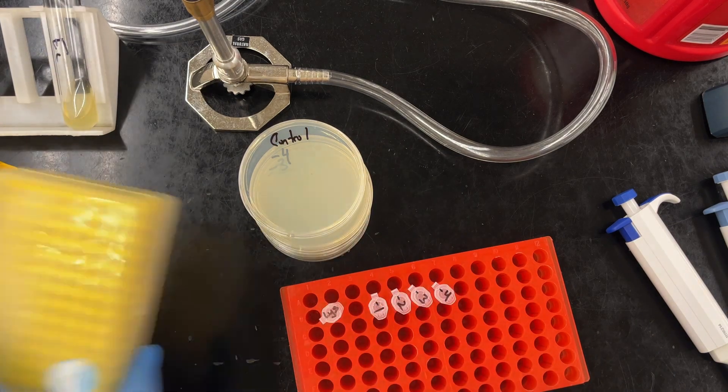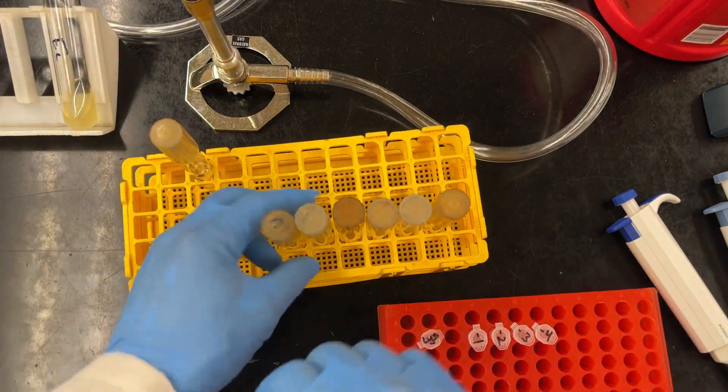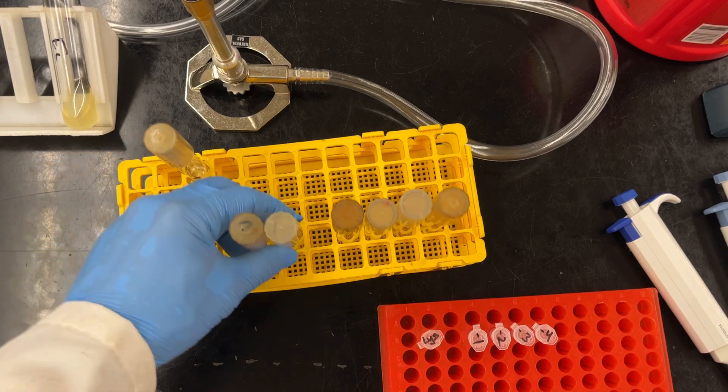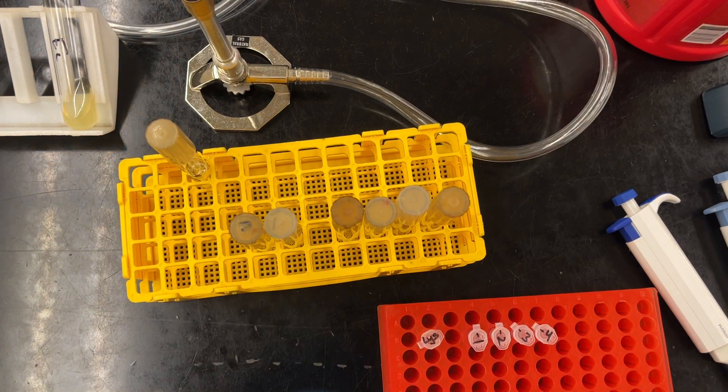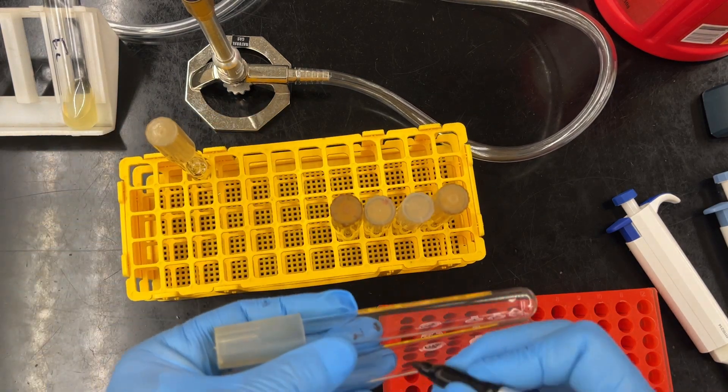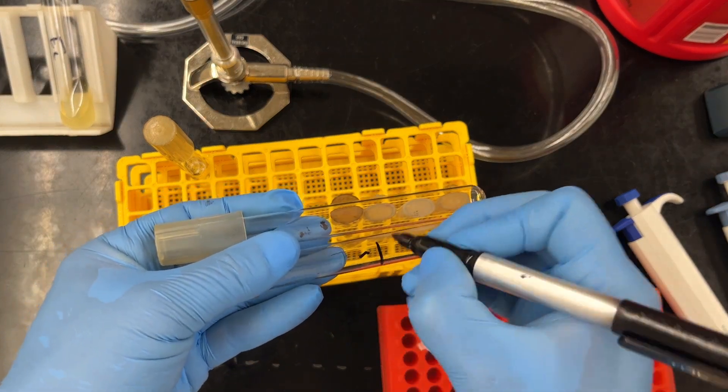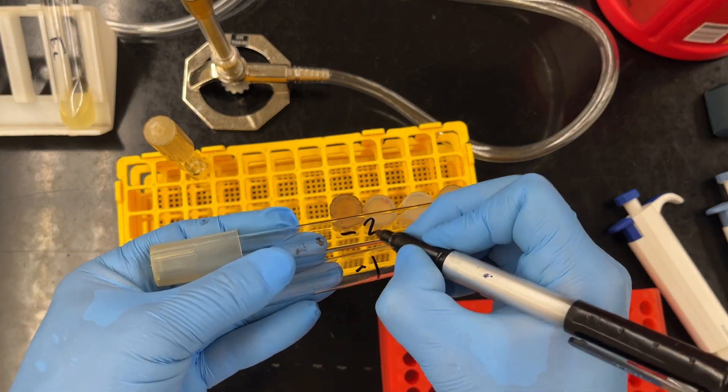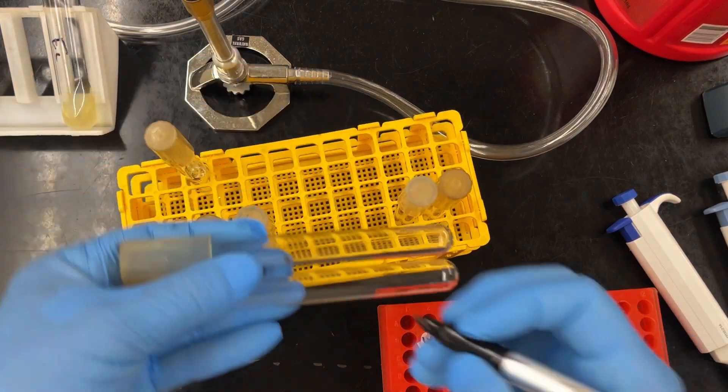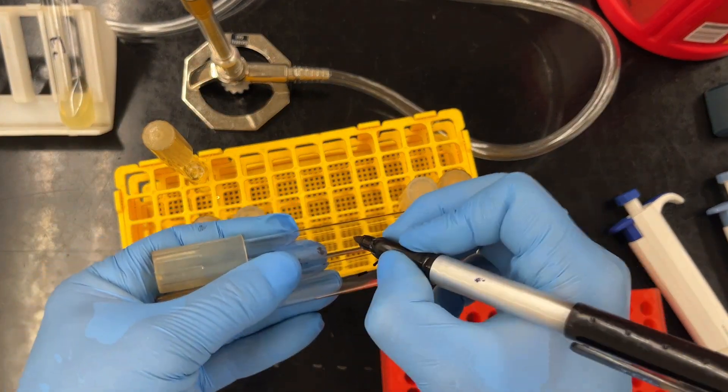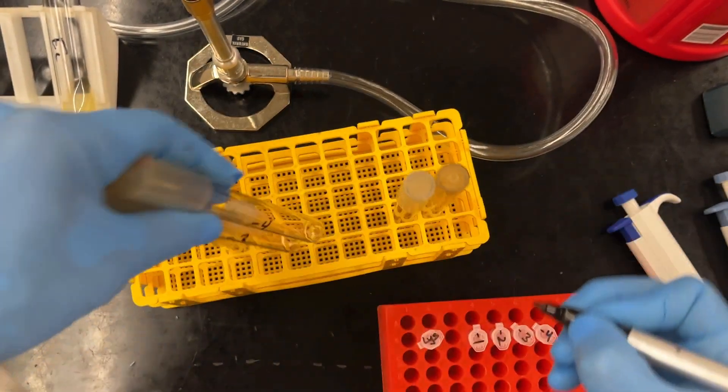When we plate phage, we actually need to give it time to adsorb to the cells, which means attach. So that's what we're going to use these tubes for. As always, we should pre-label. So we're going to write down our plates, our final dilution. So actually, you'll notice I'm going to take out our 10 to the minus 1. So minus 1, minus 2, minus 3, minus 4.